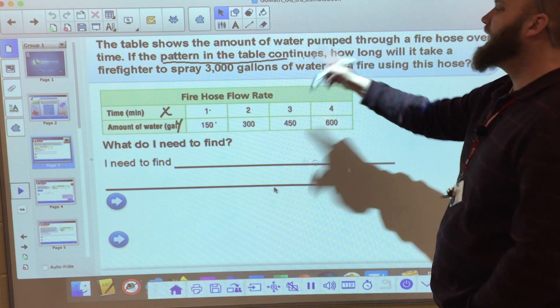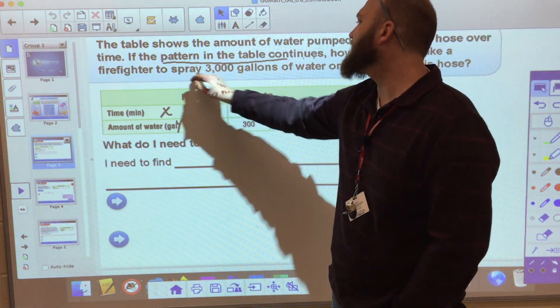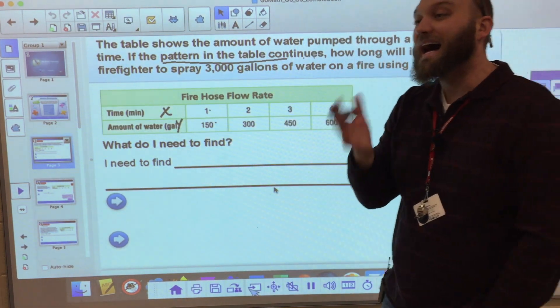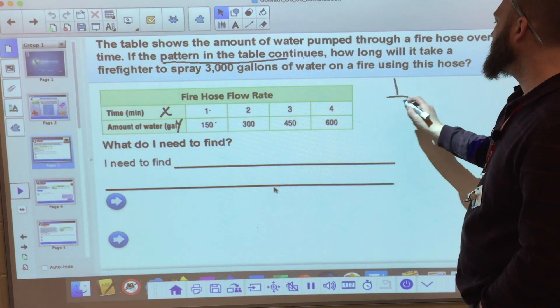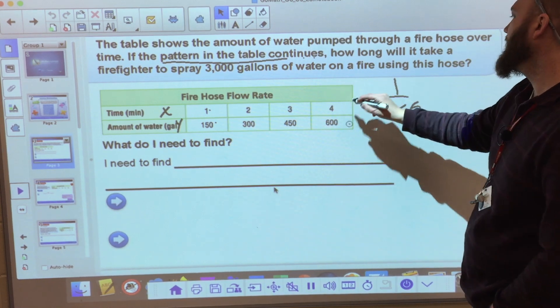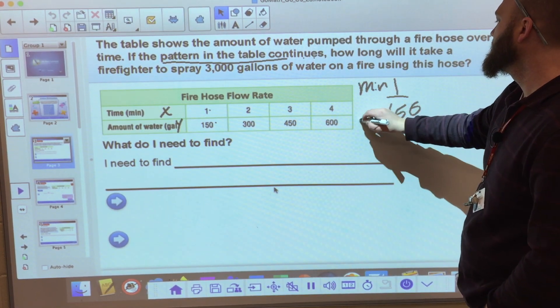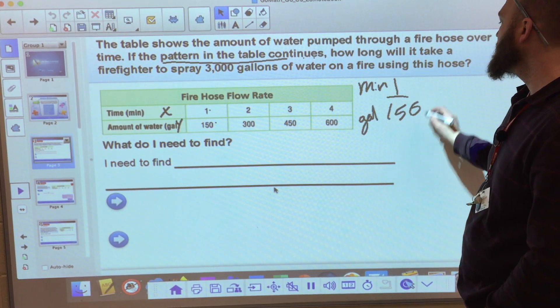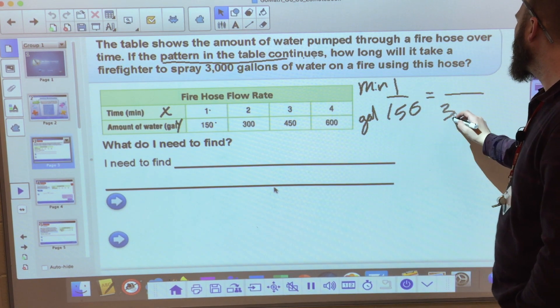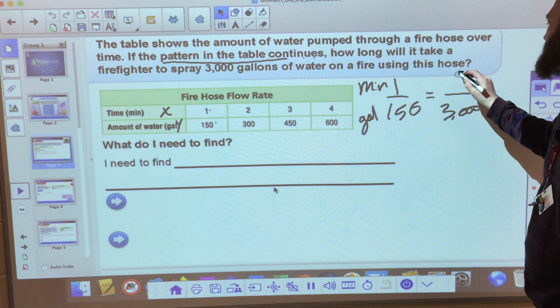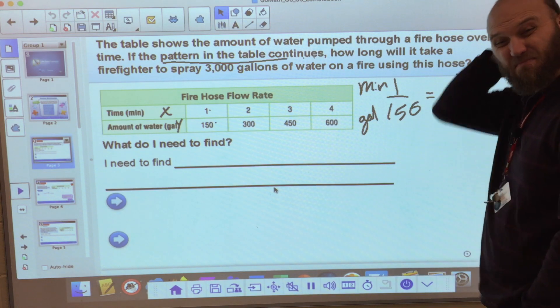So I need to find how long it would be for 3,000 gallons of water. I can actually set this up as a ratio. So if I know I have 1 to 150, and I have minutes to gallons. When I ask myself, I need 3,000 gallons. I need to solve for x minutes.